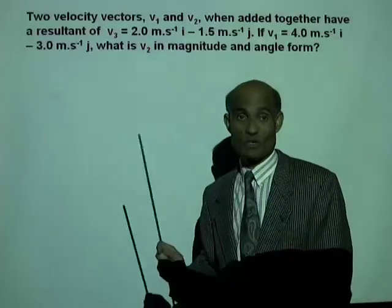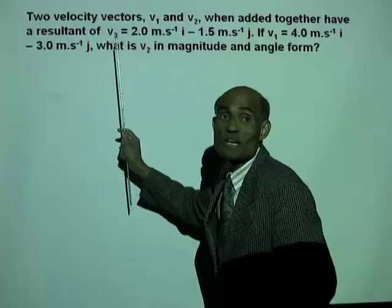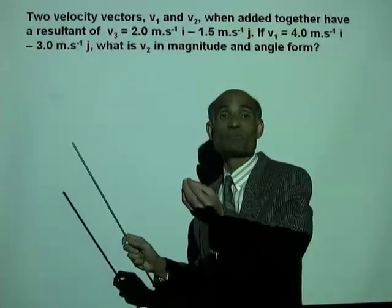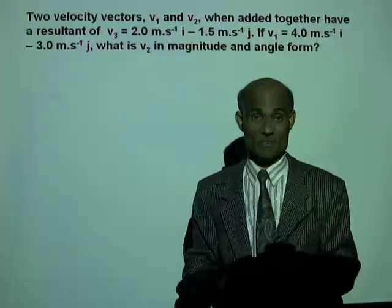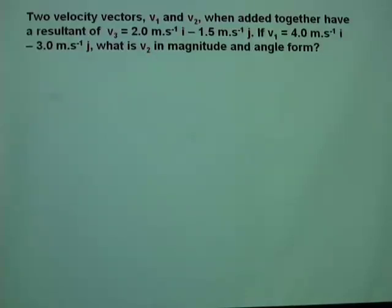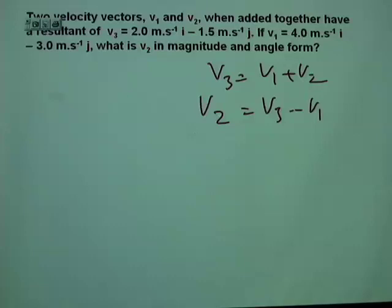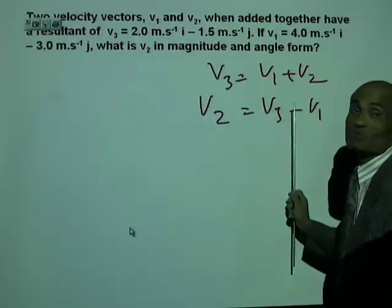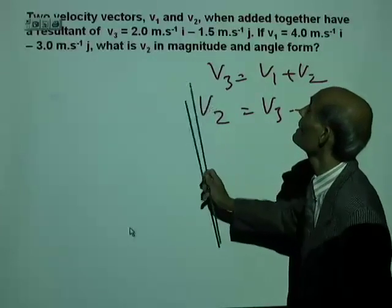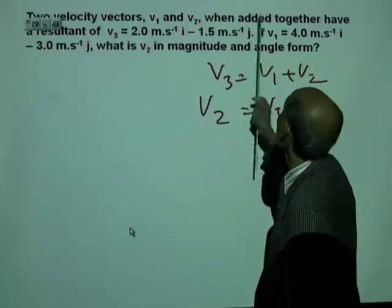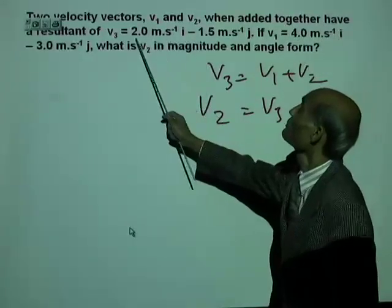You need to understand this question well. What is given here is V3. V3 is the sum of V1 and V2. You are also given V1 and are told to find V2. We know that V3 equals V1 plus V2. We know V3 and we know V1. Therefore, V2 will be V3 minus V1. The x-component of V2 is obtained by subtracting the x-component of V1 from the x-component of V3. The x-component of V2 will be 2 m/s i minus 4 m/s i — this is the x-component of V3.